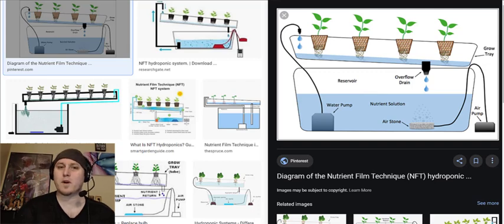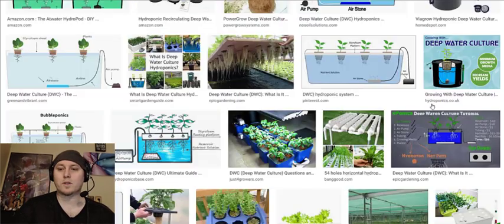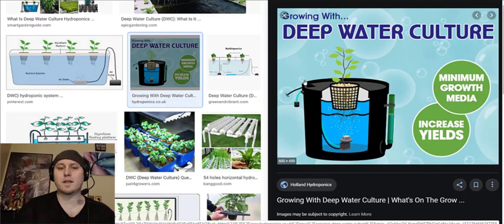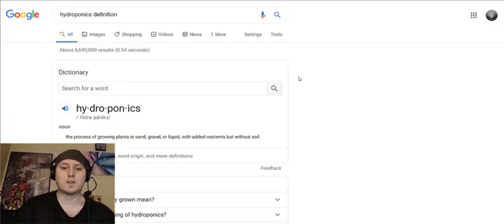A lot of people are confused and they think this is hydroponic growing, like pure water or deep water culture where you're growing in a bucket like this. This is what they think hydroponic growing is. But hydroponic growing, by definition, the definition of hydroponics is the process of growing plants in sand, gravel, or liquid with added nutrients but without soil.